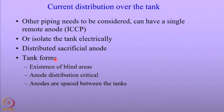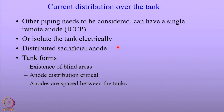The current distribution over the tank is equally important. There are cases where other pipings are considered, especially for buried tanks where the pipings are part of the de-tanking process. You can have a single remote anode that will take care of the cathodic protection of the tanks, or isolate the tank electrically and confine the cathodic protection only to the tank.